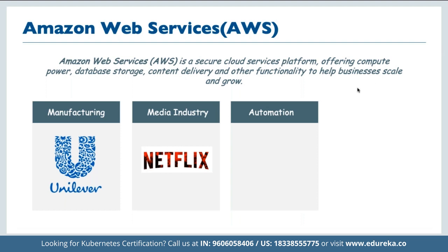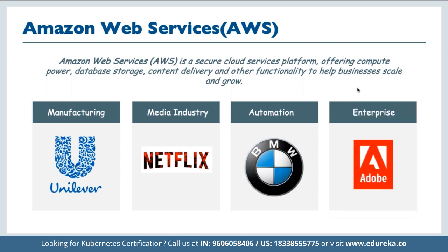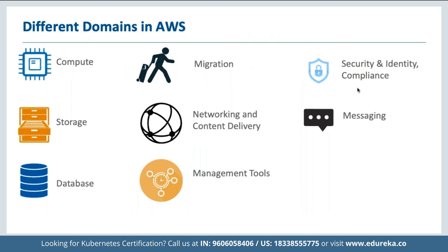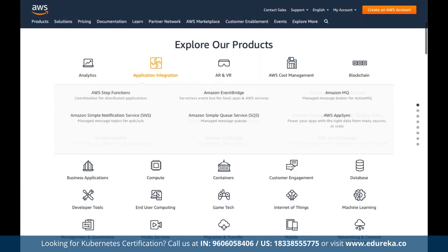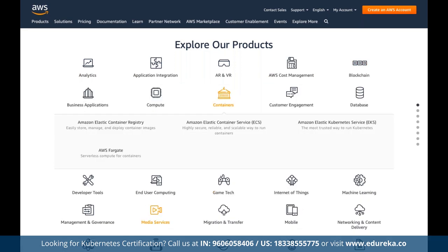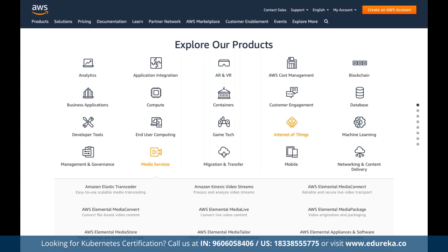All major companies are customers of AWS — Unilever, Netflix, BMW, Adobe — they have a long list of clients who have deployed services on top of Amazon Web Services across different domains. To be precise, AWS currently offers 157 services, covering computation, migration, security, storage, networking, content delivery, messaging, databases, and management tools. You can view the entire list at aws.amazon.com.